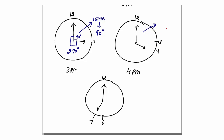Next is 4 o'clock. At 4 p.m. or a.m. the hands are in this position. The gap is 20 minutes, which equals 20 × 6 = 120 degrees. And for 7 p.m. or a.m., the gap is 25 minutes. 25 × 6 = 150 degrees. So at 7 p.m. or a.m. the angle between the hands of the clock is 150 degrees.